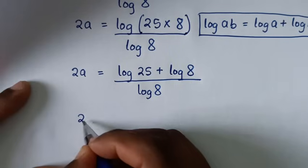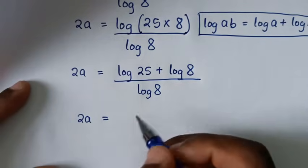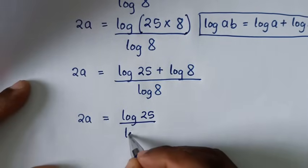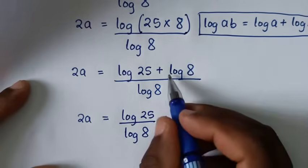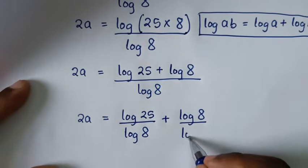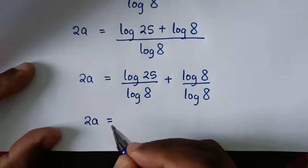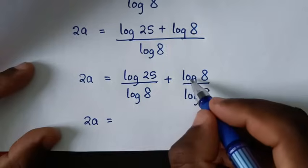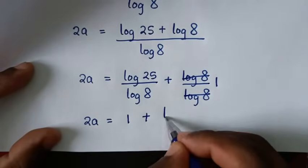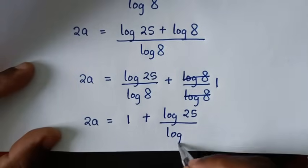Then it will be 2a is equal to — we'll divide each term in the numerator by log of 8 — so log of 25 over log of 8 plus log of 8 over log of 8. Since log of 8 divided by log of 8 is 1, it simplifies to 2a is equal to 1 plus log of 25 over log of 8.